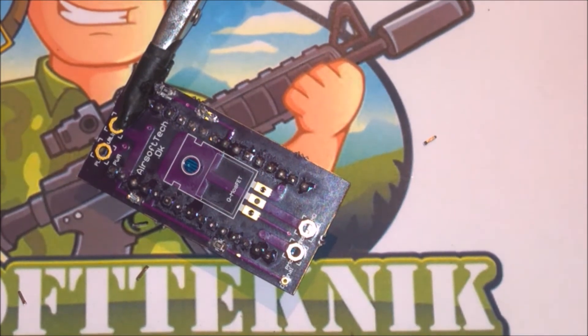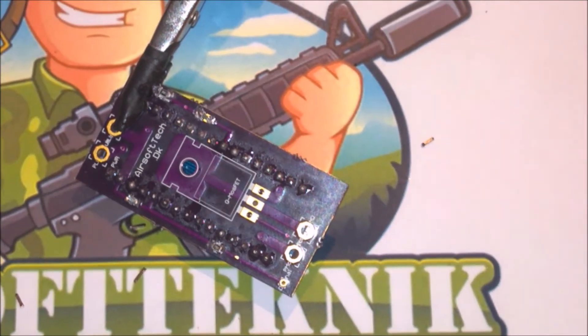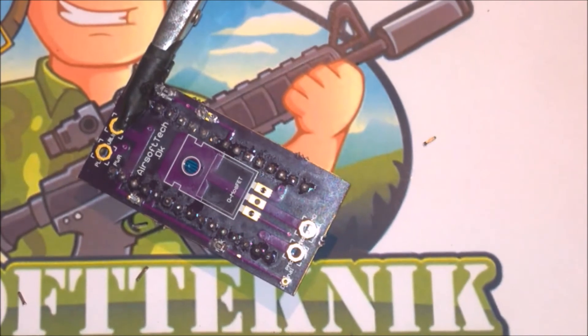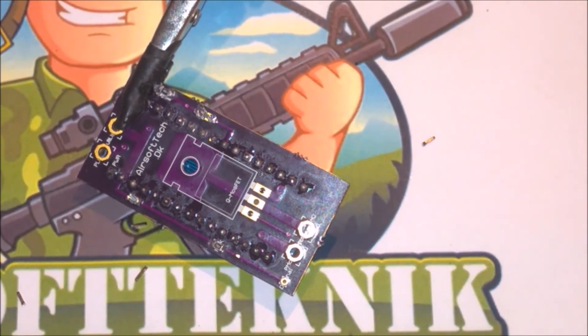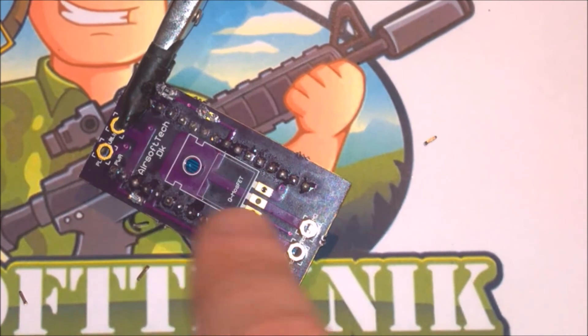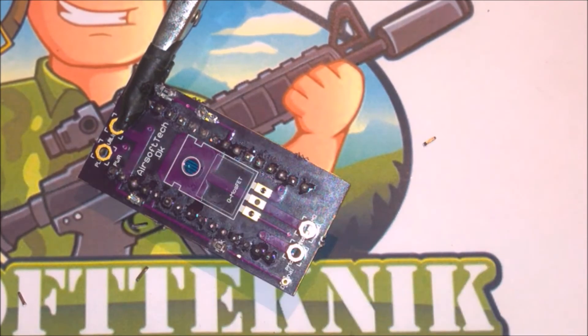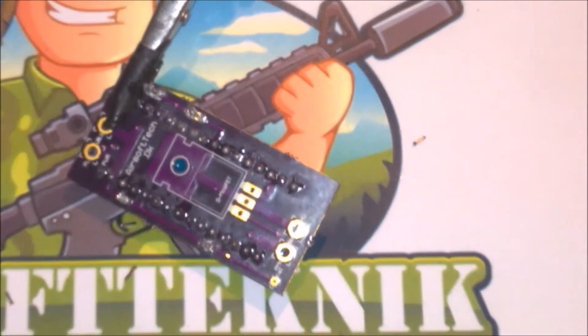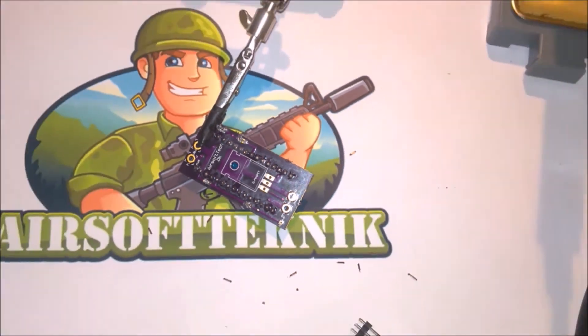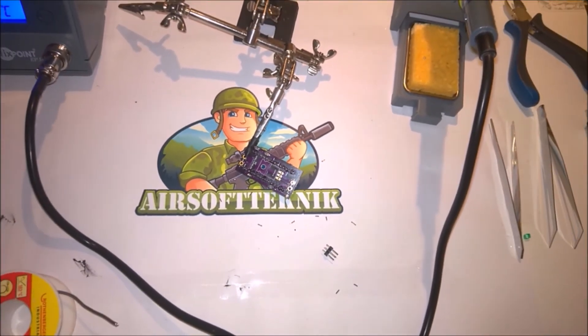Now the only thing that is missing is the motor connectors, the battery connectors, the trigger wire and the MOSFET. And the MOSFET itself that goes on the back. It is pretty trivial to solder on so I won't show it in the video. Instead I will just show you the final result.